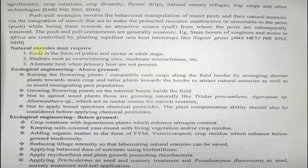Natural enemies may require food in the form of pollen or nectar, shelter such as overwintering sites, a moderate microclimate, and alternate hosts when primary hosts are not present.